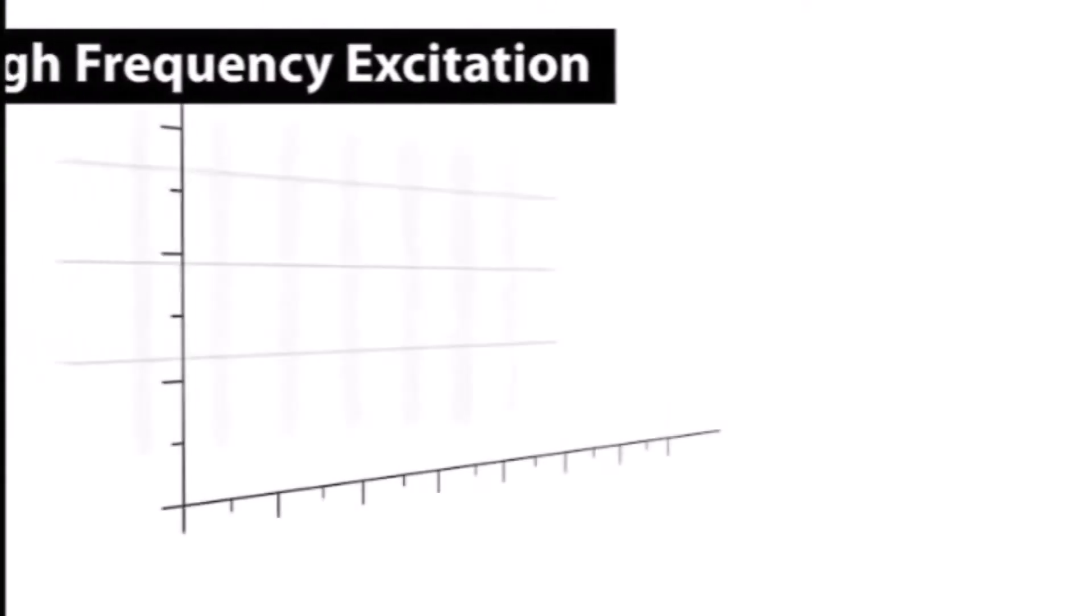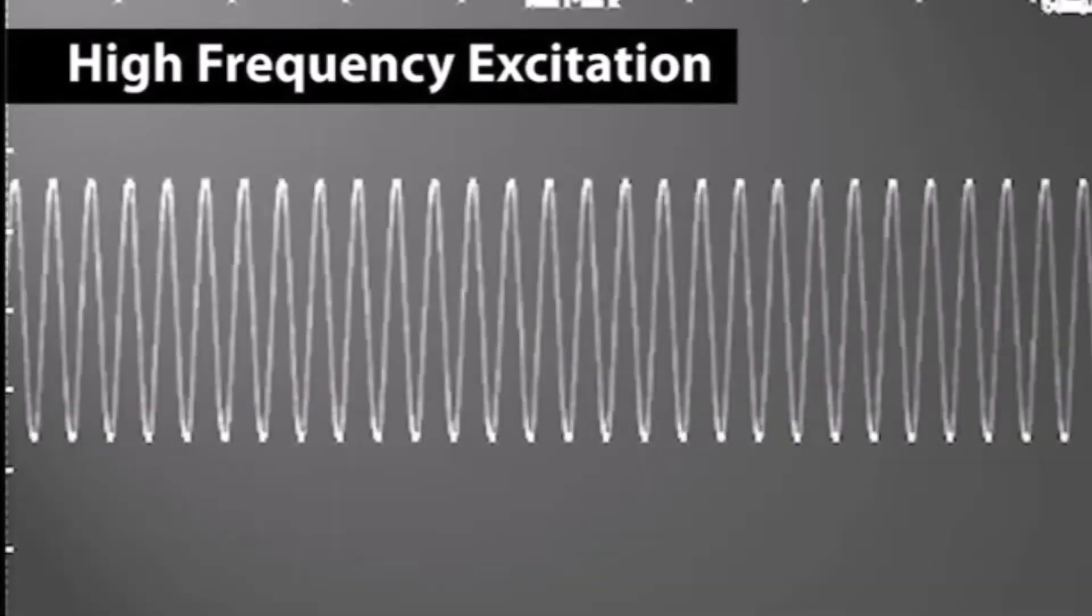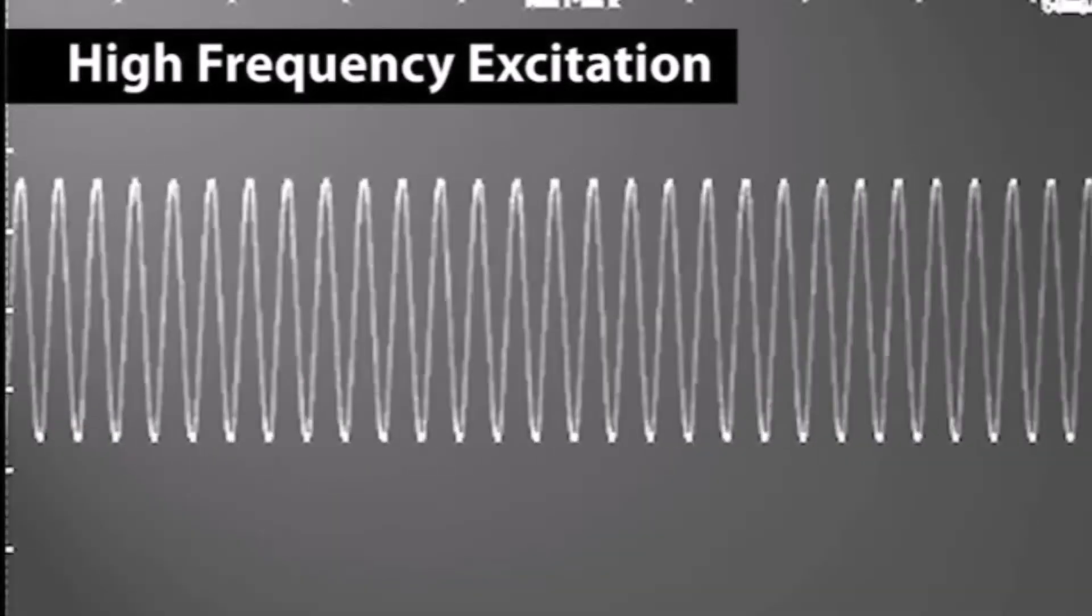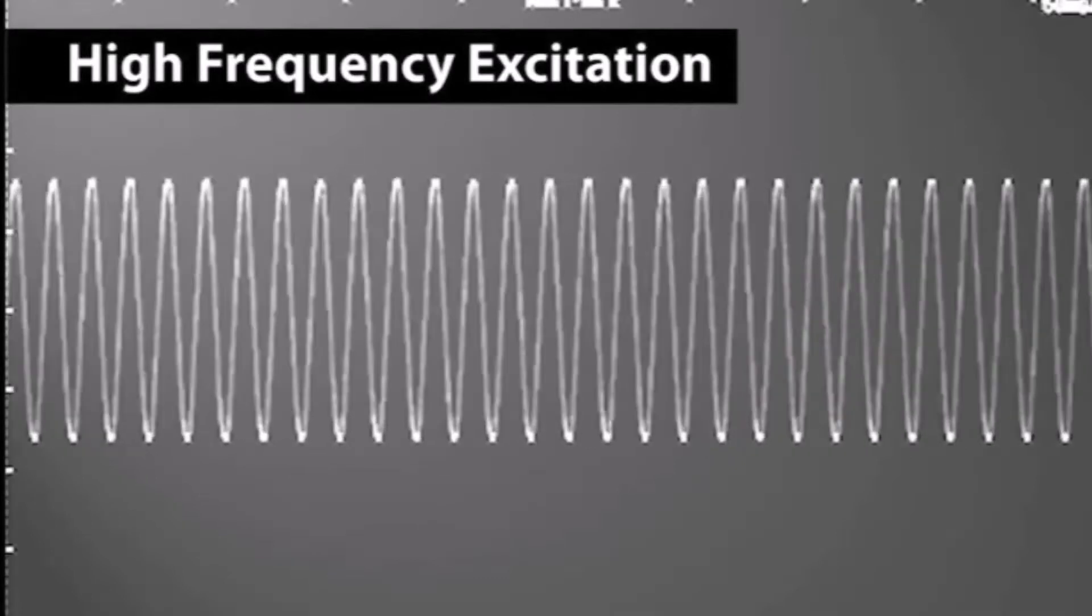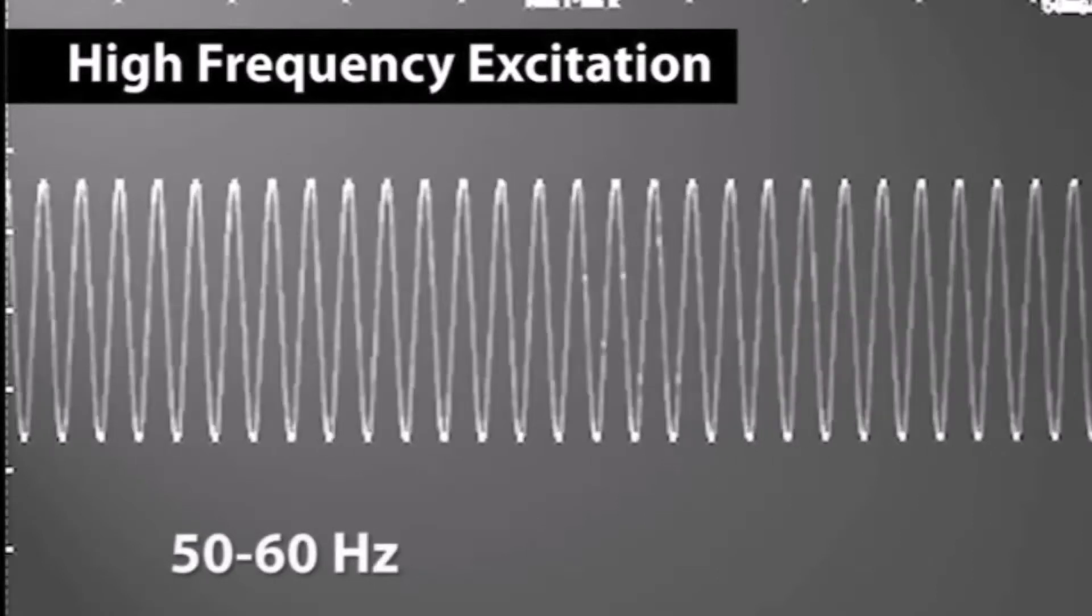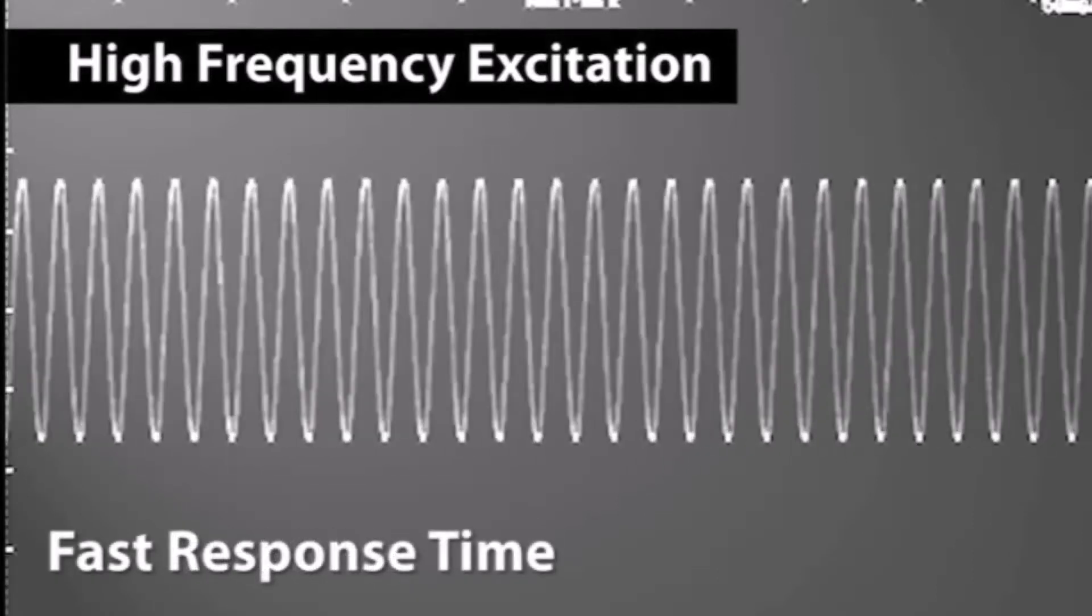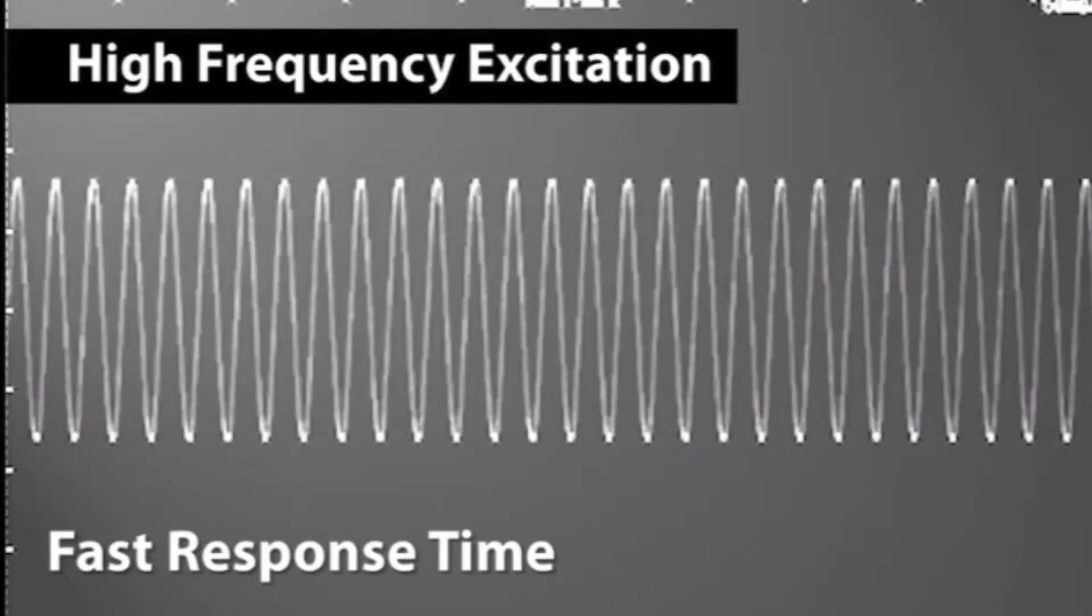When magnetic flow meters were originally designed over 50 years ago, they utilized AC-type excitation. AC-powered magnetic flow meters use line frequency to generate the magnetic field. The frequency of AC excitation is typically 50 to 60 hertz. This type of excitation has a very fast response time, making it suitable for slurry applications.